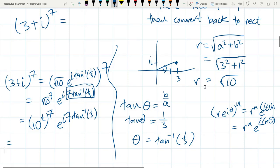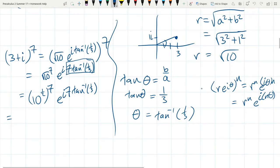We're going to write this in the cosine i sine form. You can multiply those two powers. So we have 10 to the 7 halves. 10 to the 7 halves power, like that.